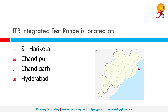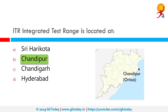It is located where? The correct answer is Chandipur, which is in Orissa. This integrated test range — sometimes referred to as the interim test range — is a missile testing facility composed of two complexes: Launch Complex 4 (LC4) located on Abdul Kalam Island, and Launch Complex 3 (LC3) located at Chandipur.